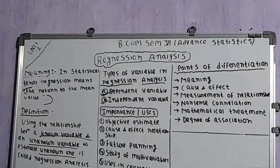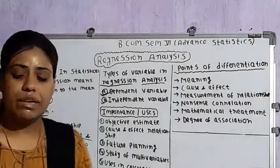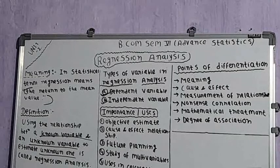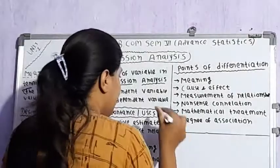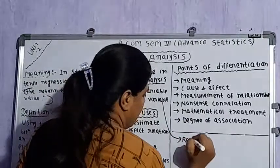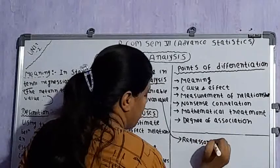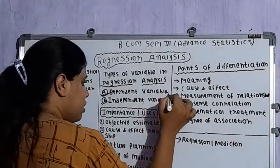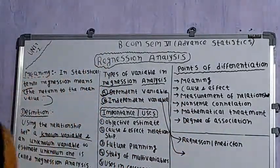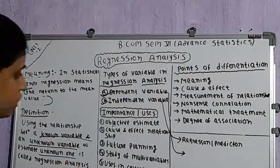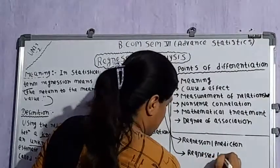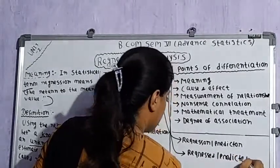The independent variable influences the value of the dependent variable. The independent variable is also known as the regressor or predictor, while the dependent variable is also known as the regressed or predicted. Keep these terms in mind because they can be asked in MCQs.